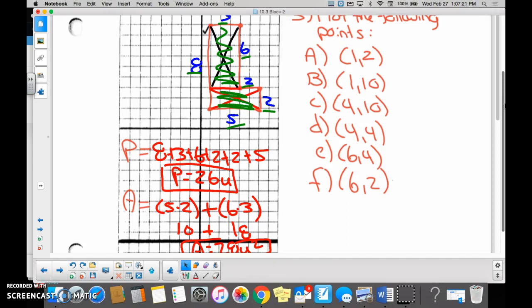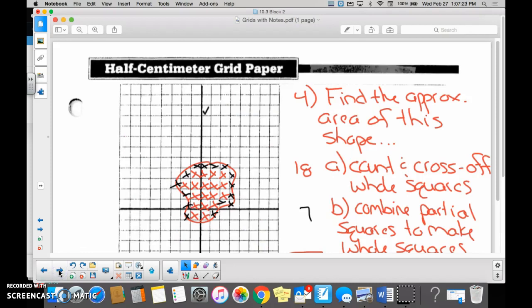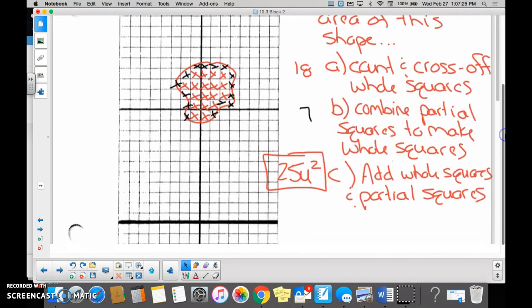And then the last one, number four, we had to find the area of that shape. Melissa, what do these red X's that I'm now making green represent? The full bottom. Okay, so we counted and crossed off the whole squares, right? So you counted all of these, the red and the green ones now, and we came up with how many? 18.